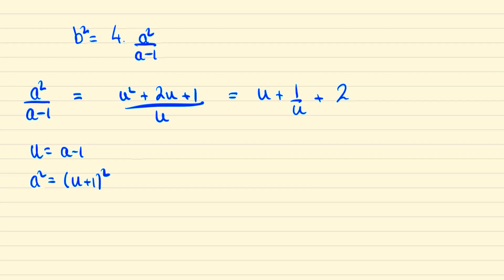And once more finding the minimum of this expression is the same thing as finding the minimum of u plus 1 over u. So we can note that u is greater than 0 so thus we can use the arithmetic mean geometric mean inequality. So that is to say that a half of u plus 1 over u is greater than or equal to the square root of u times 1 over u which is just equal to 1.